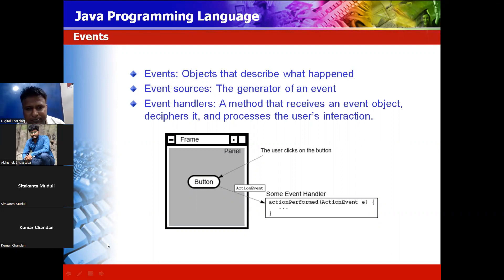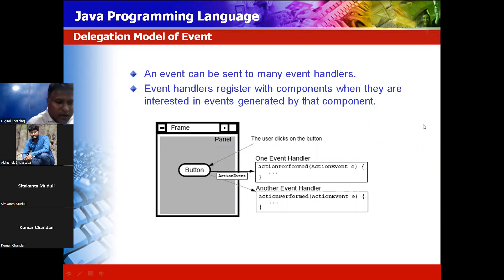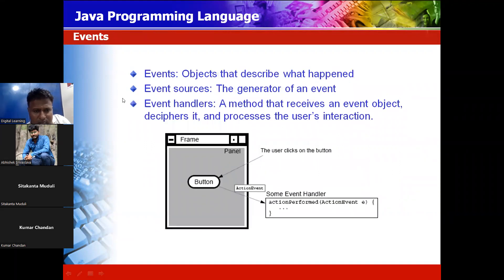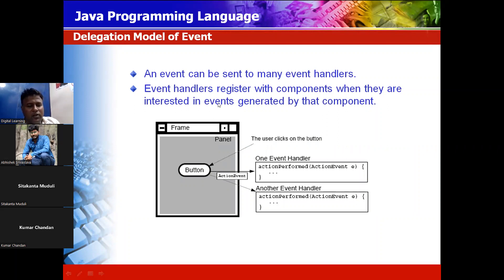So to summarize these three parts: event, event source, and event handler. An event can be sent to many event handlers, and event handlers register with the component when they are interested in the events generated by that component. When you click on a button, it can be sent to many event handlers.